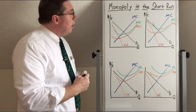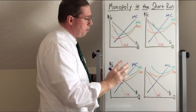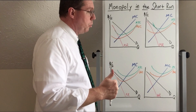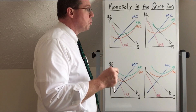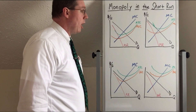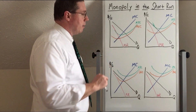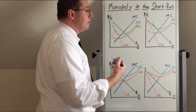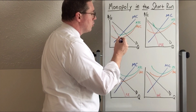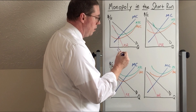Up here we've got this first situation. Pause the video and see if you can figure out which one is the shutdown, which one is the profiting, which one's the zero economic profit, and which one is the operating at a loss. This monopoly is going to decide to produce a quantity where marginal revenue is equal to marginal cost, and so this is going to be the profit-maximizing quantity.